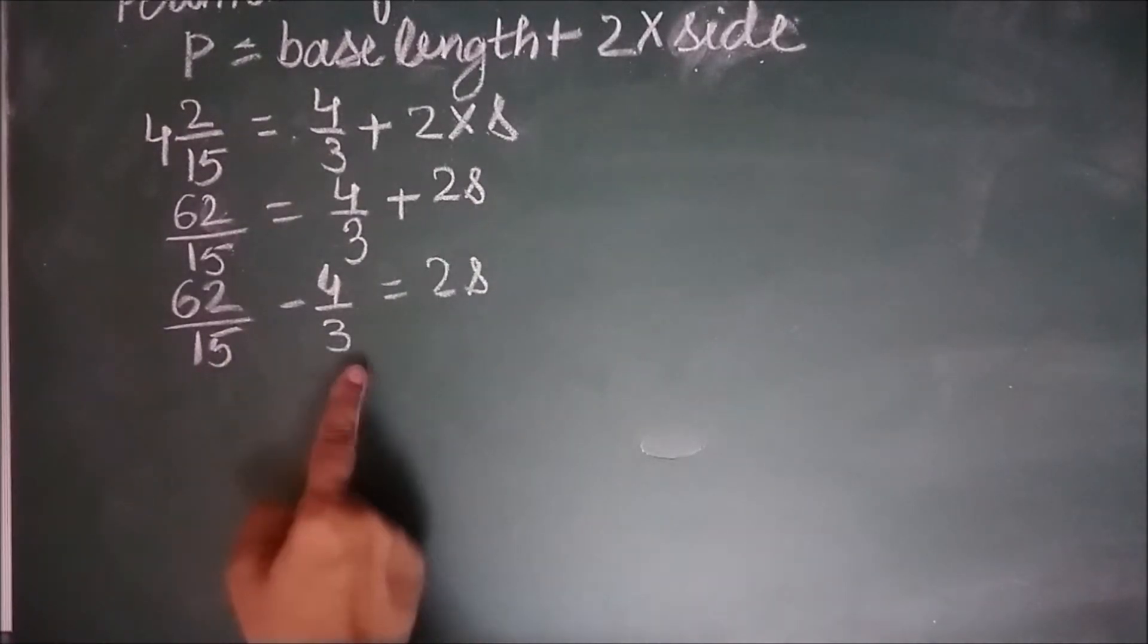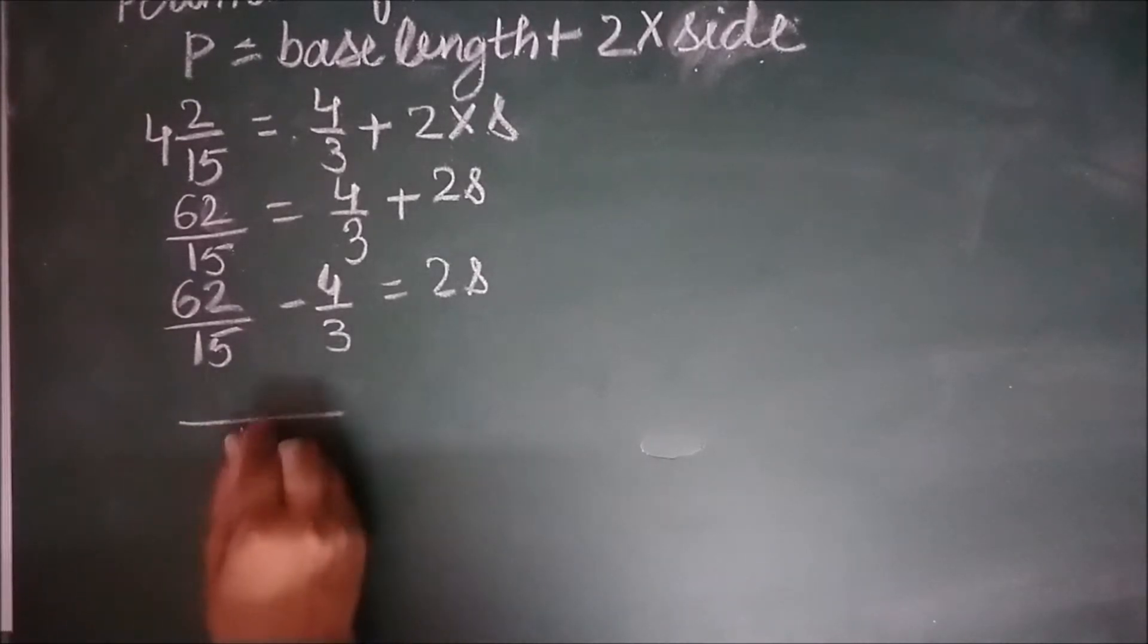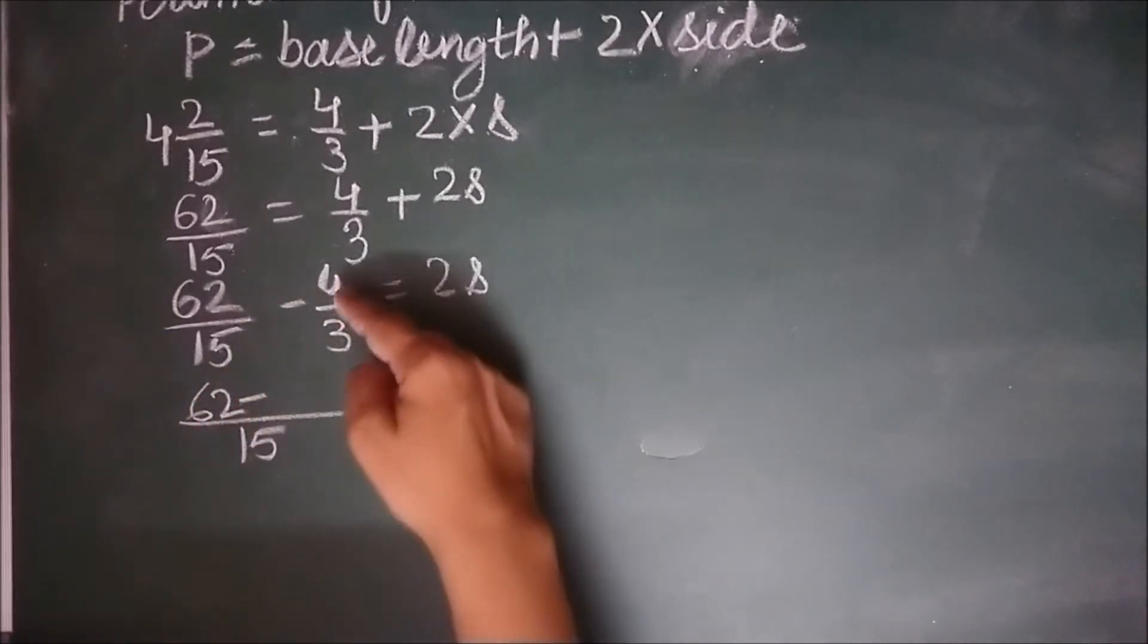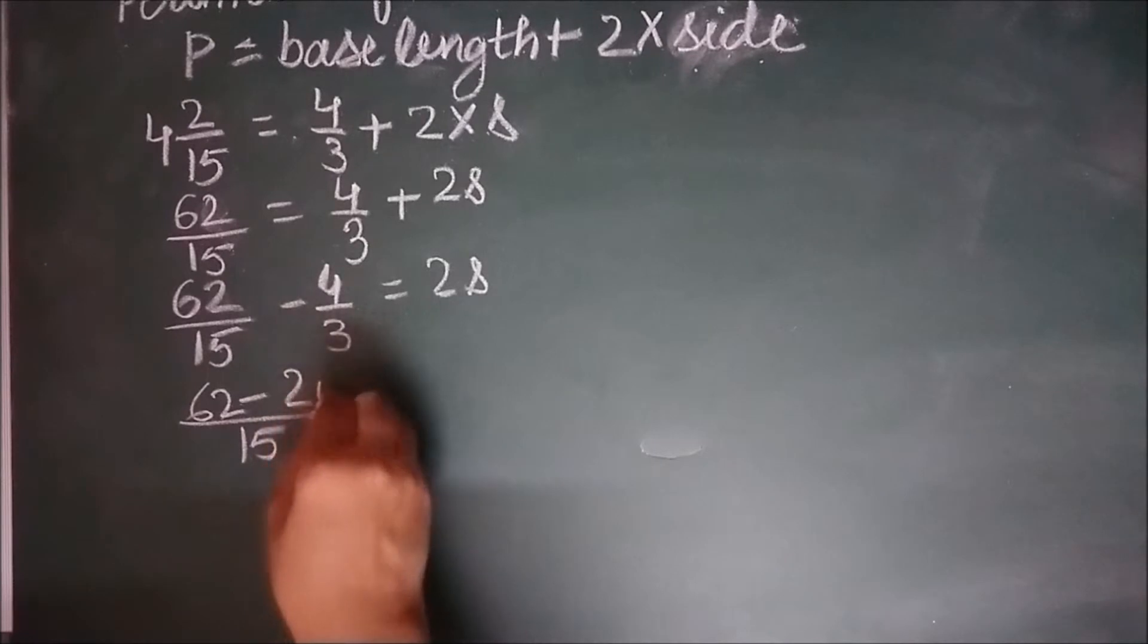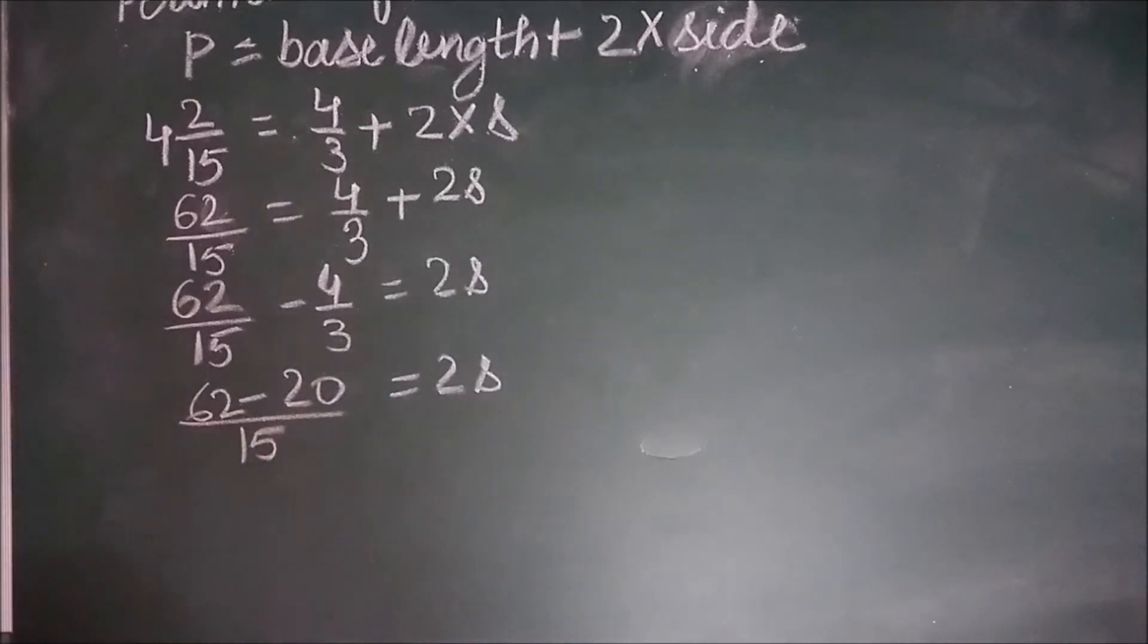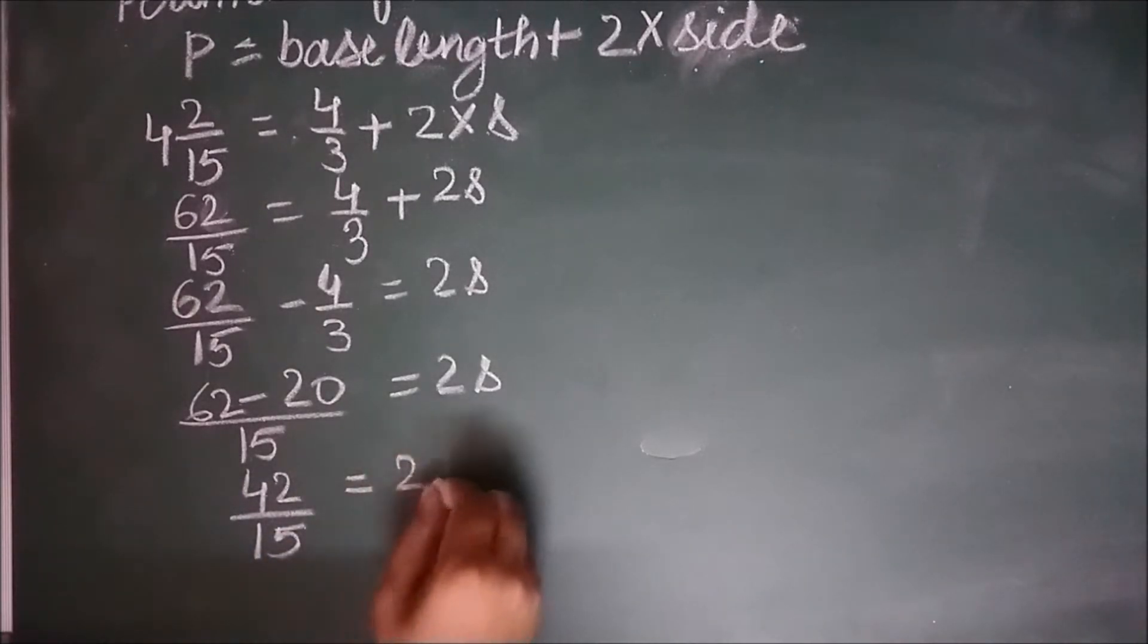Let us take LCM of the denominators to solve this. It will be 15. 62 minus 5 4s are 20 equal to 2S. 62 minus 20 will be 42. 42 by 15 equal to 2S.